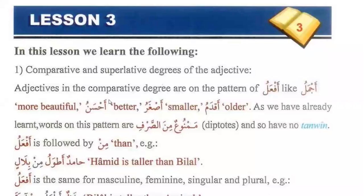In this lesson we learn the following: comparative and superlative degrees of adjectives. Comparative and superlative degrees are on the pattern of af'al, like ajmal — more beautiful — ahsan — better — as'ghar — smaller. We have already learned words on this pattern.